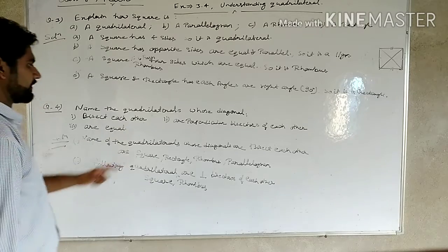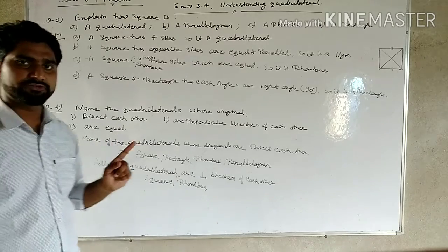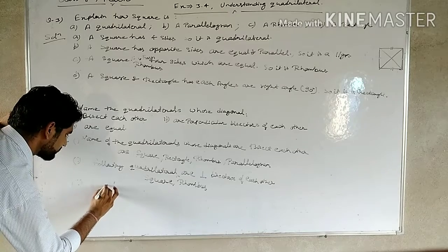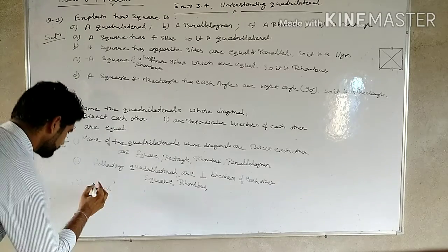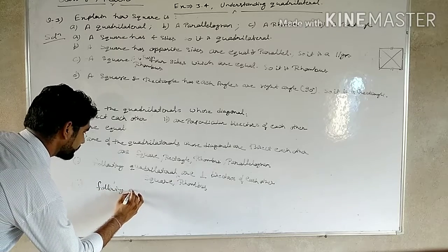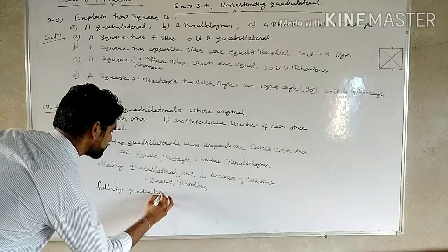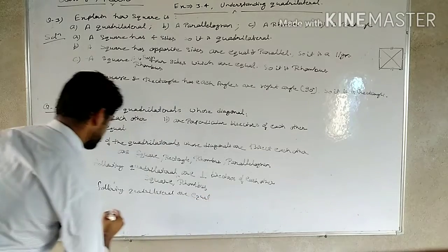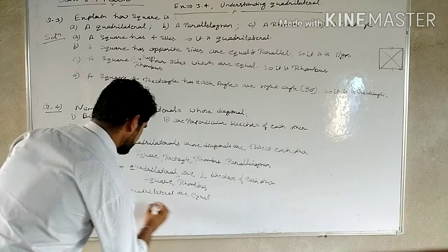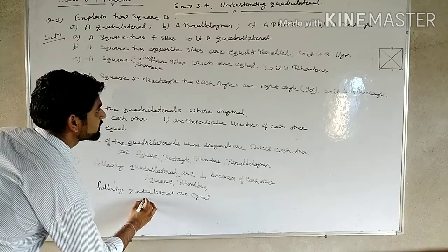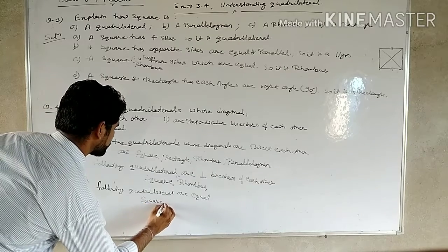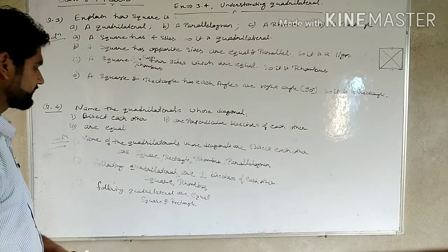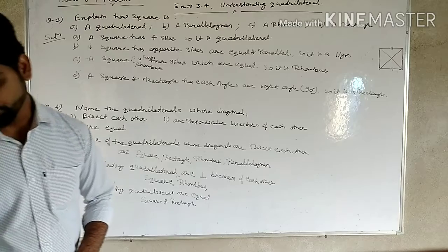Third part: name the quadrilaterals whose diagonals are equal. The answer is a square and a rectangle. In a square and rectangle, the diagonals are equal to each other.